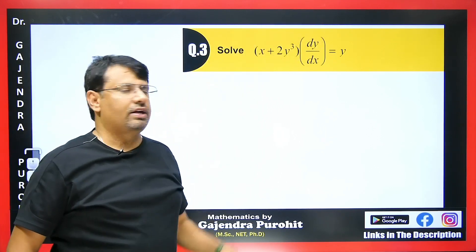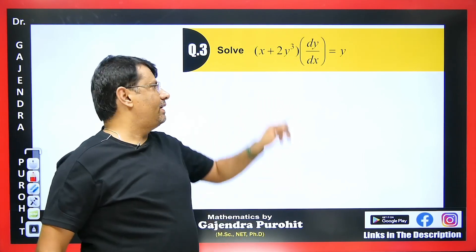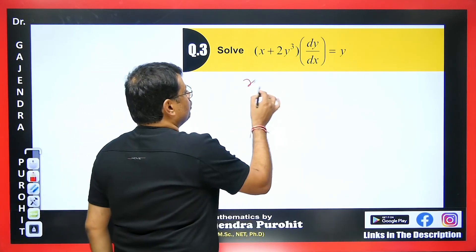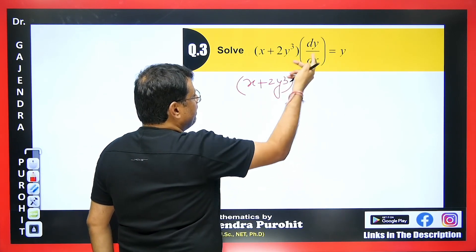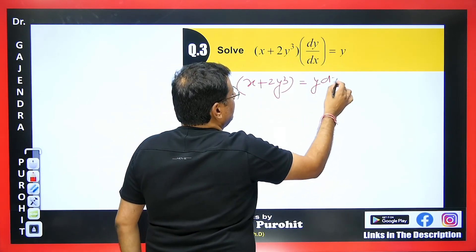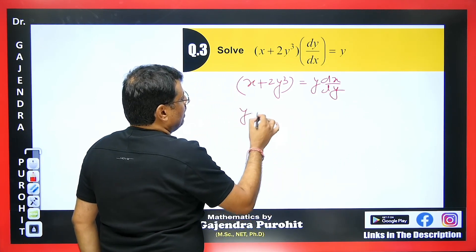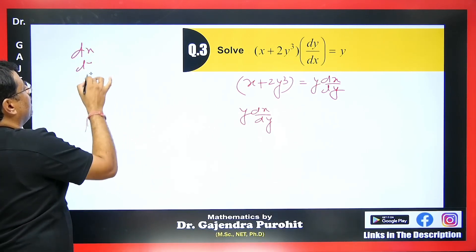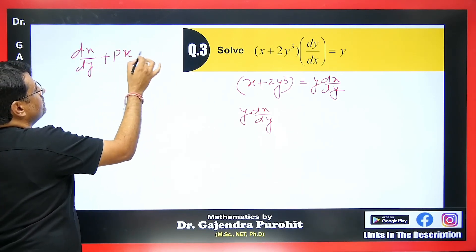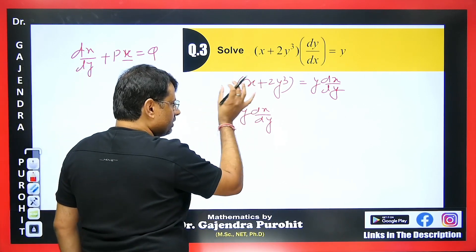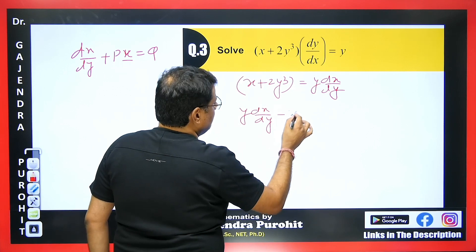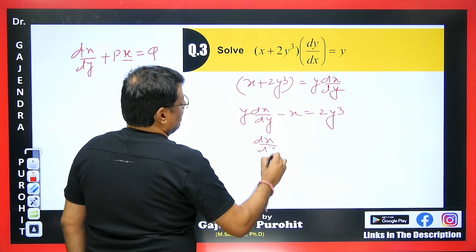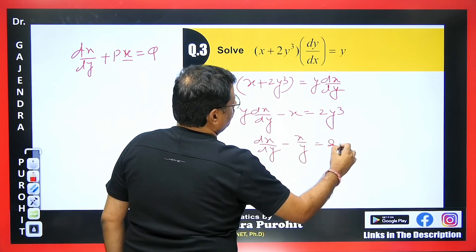Look at this question — students get confused whether it is linear in x or y. Here x is given only once, so it is linear in x, meaning we need dx/dy. The equation is x + 2y³ in form. Taking the reciprocal and rearranging, we get y·dx/dy. Moving the x term to get the form dx/dy + Px = Q, we divide by y to obtain dx/dy − x/y = 2y².